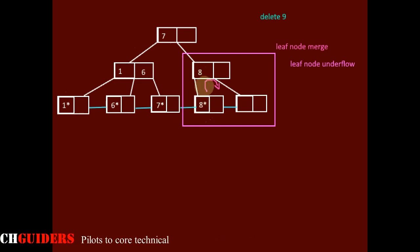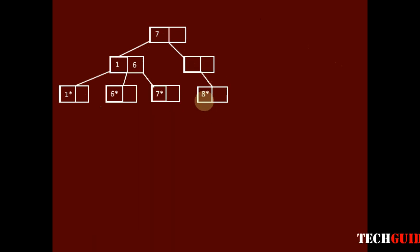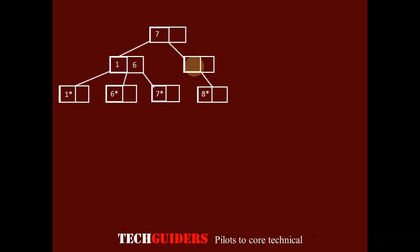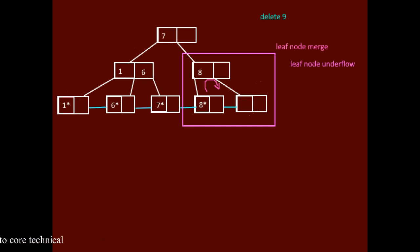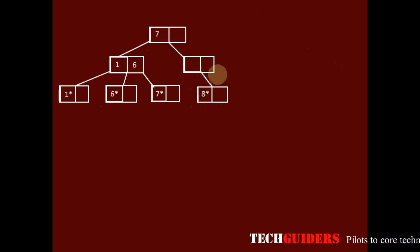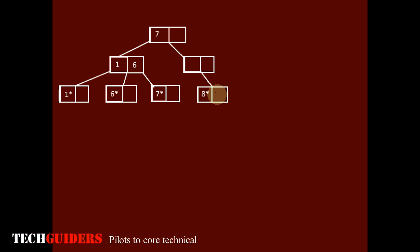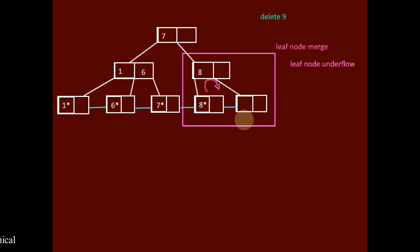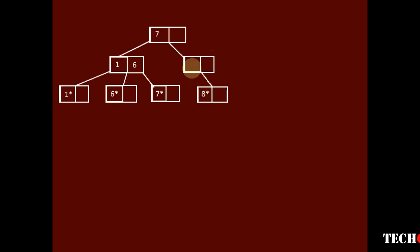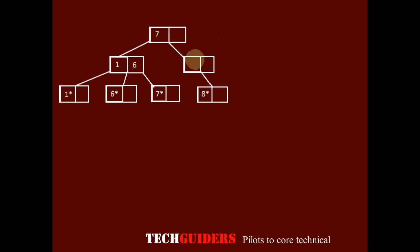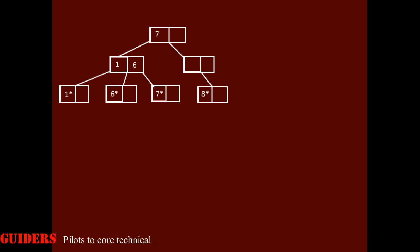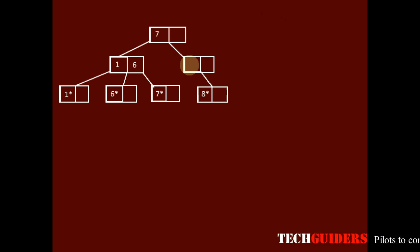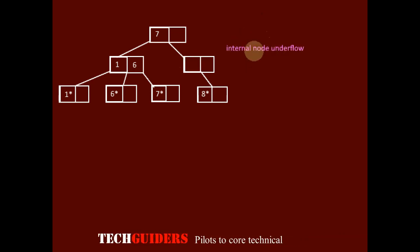The sibling node will be merged into the underflow node through the parent — consider this also as a rotation. All three will be merged into a single node. Both keys correspond to the same data, so the final result is just the key 8 with its corresponding record pointer. There will be nothing remaining in the parent, and the other node will also be deleted. This leaf node merging has led to an underflow in the internal node, which requires a minimum of one key but now has none.